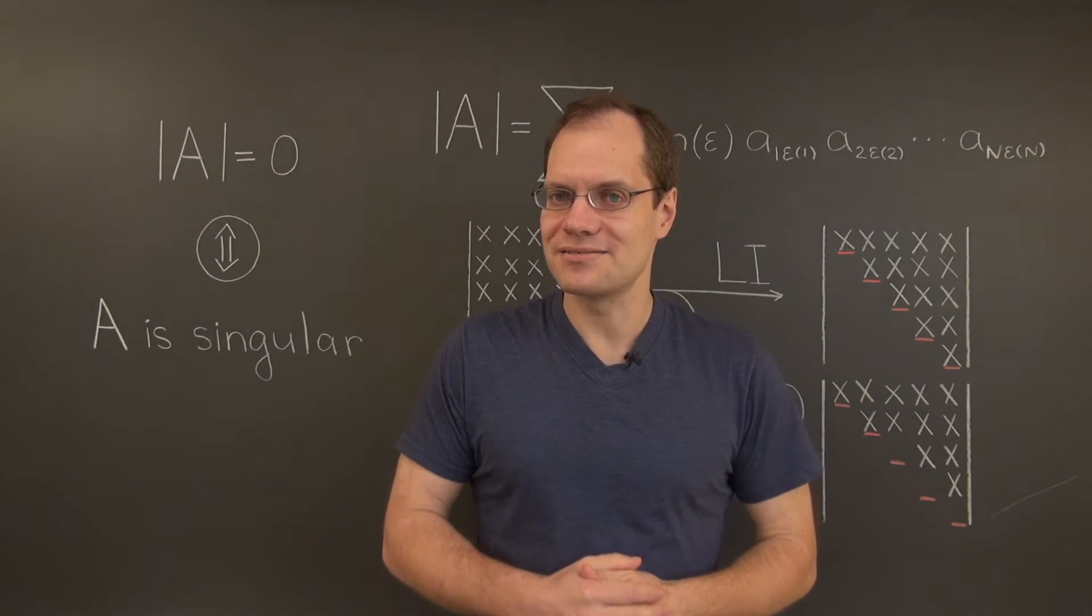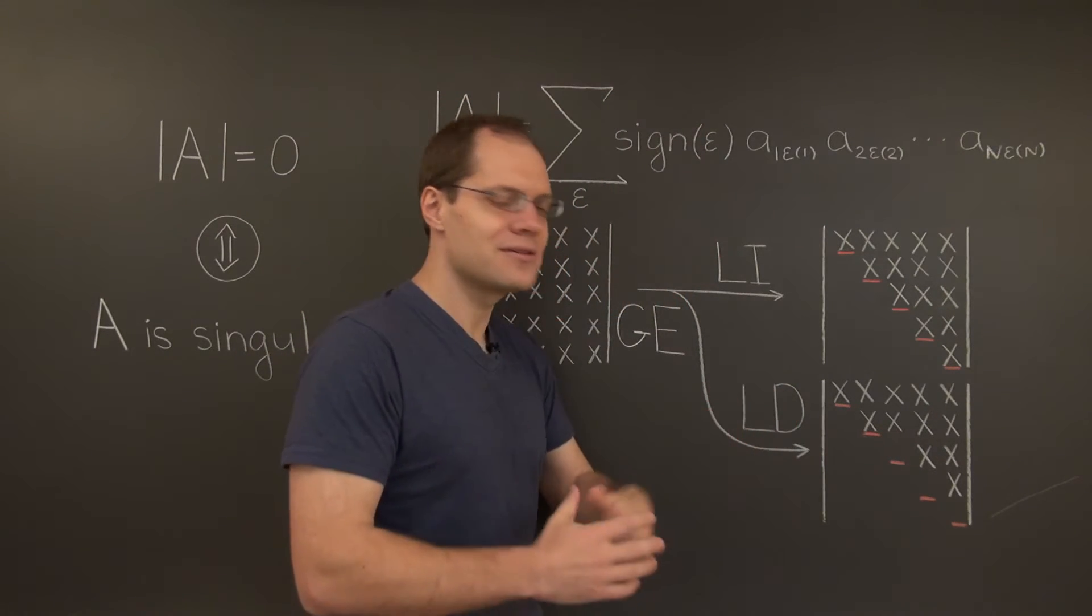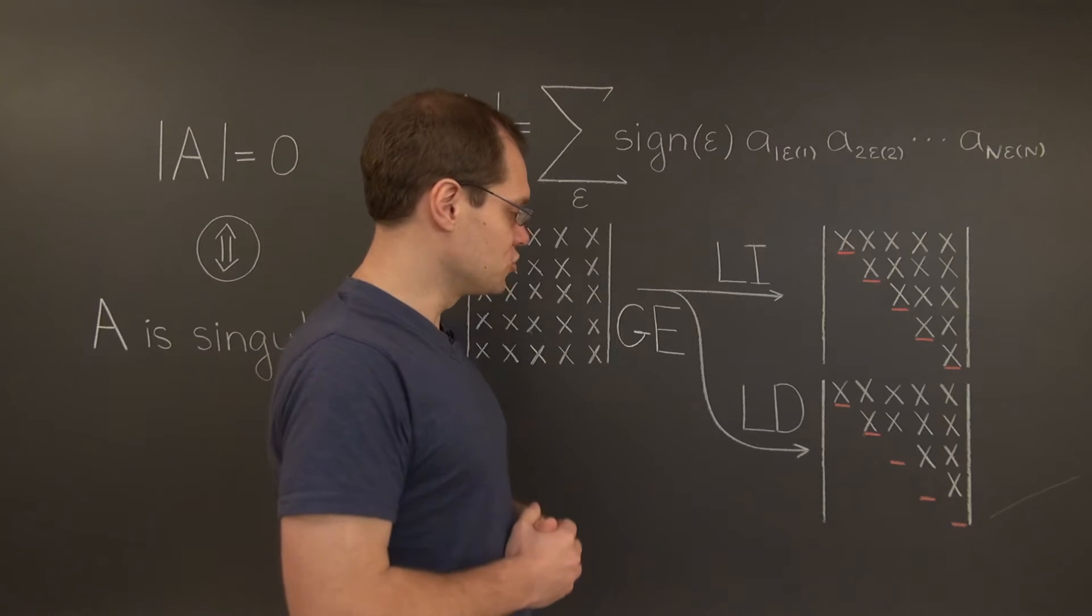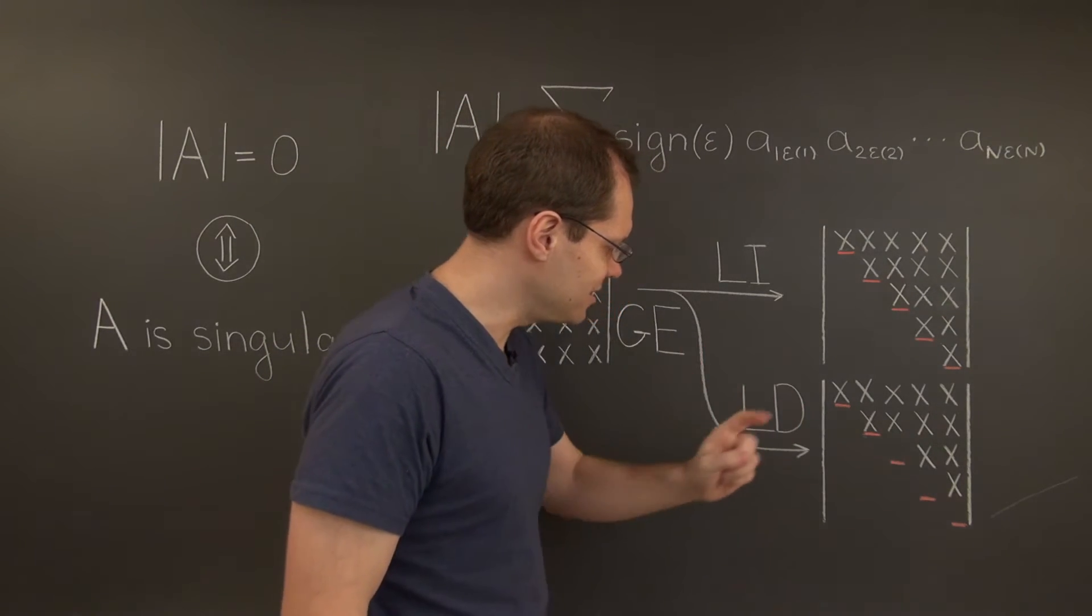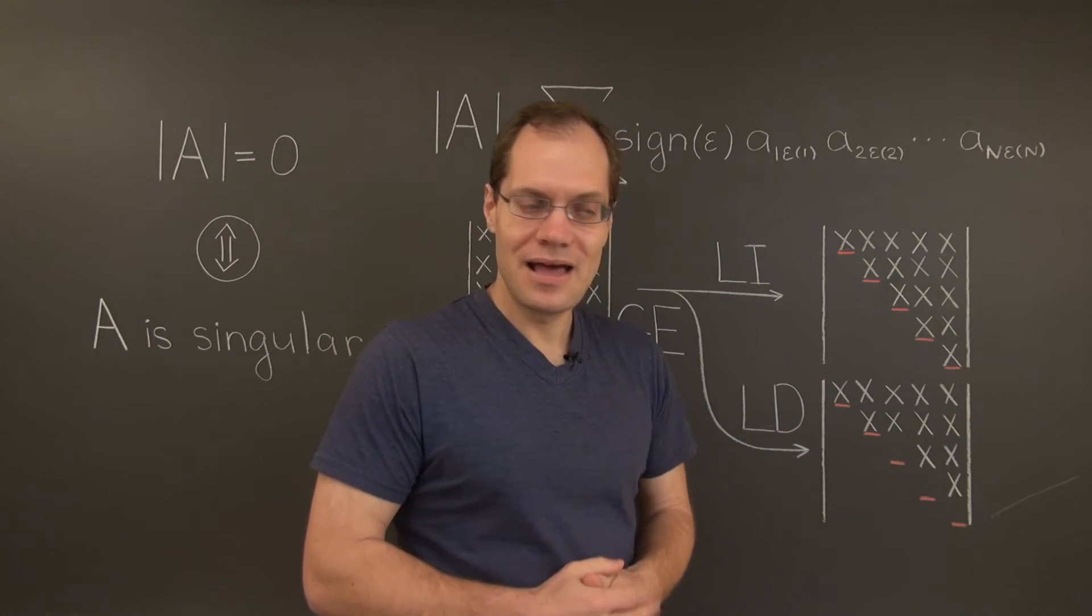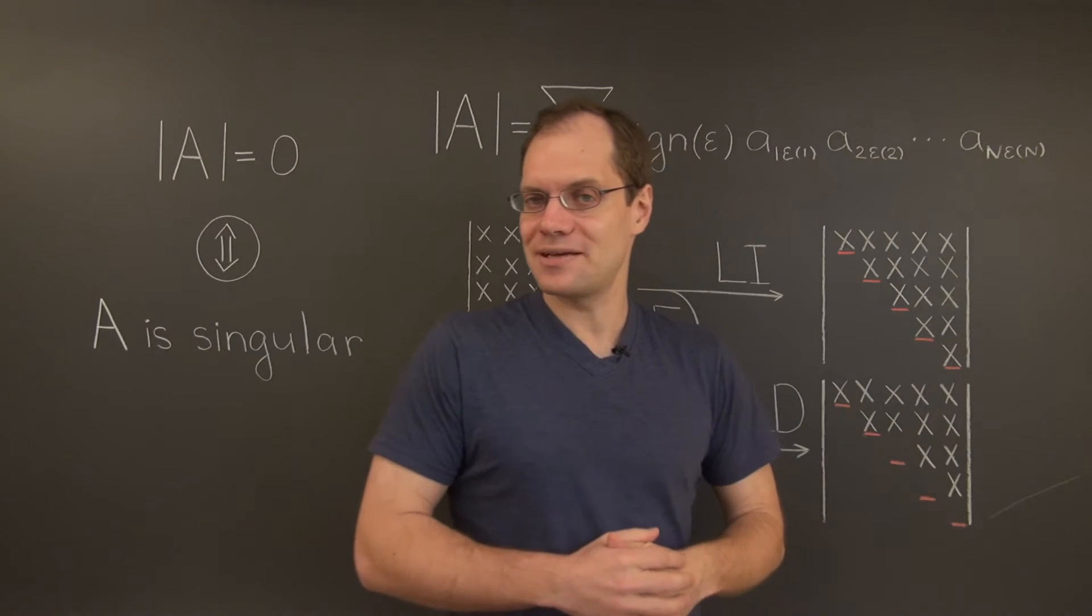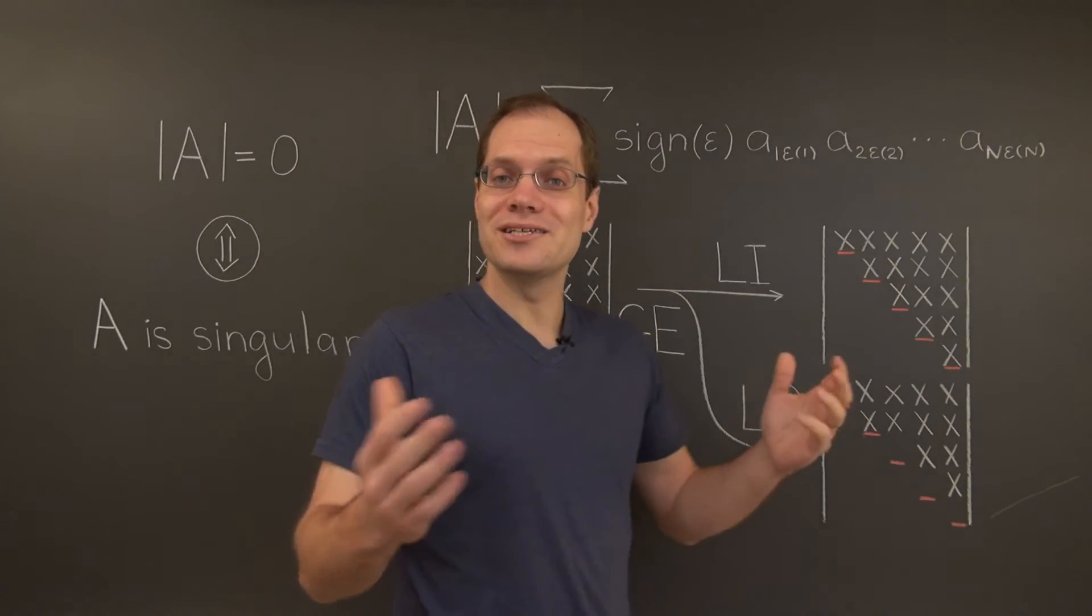What about the singular case? Well, when the matrix is singular, in other words, its columns are linearly dependent, we're sure to encounter a non-pivot column. In this case, it's column three. And the non-pivot column, and all of the subsequent columns for that matter, have zero on the diagonal.